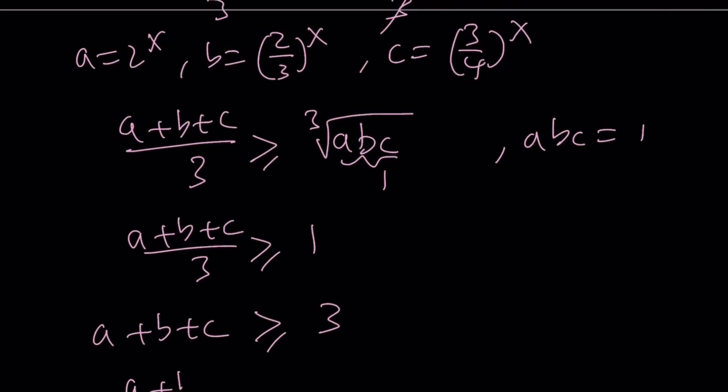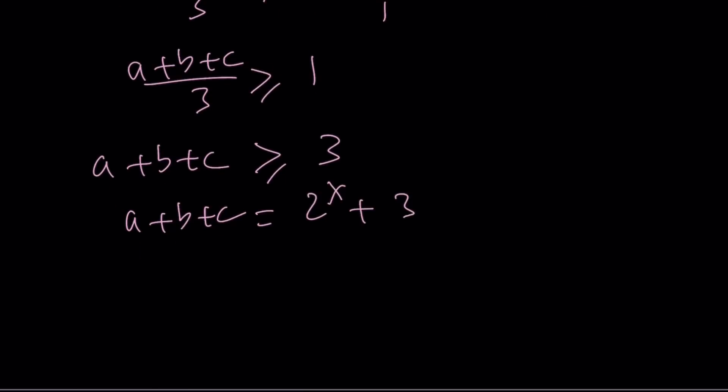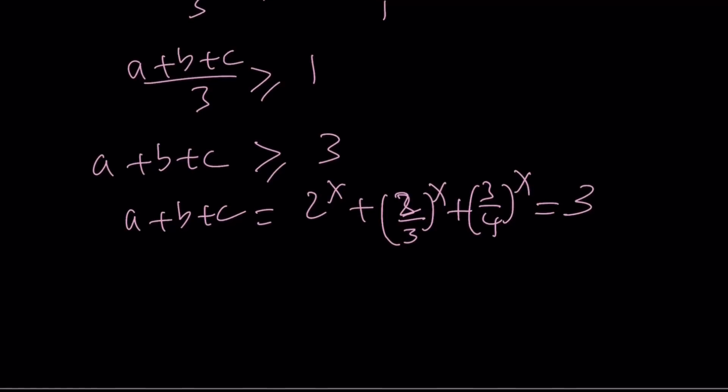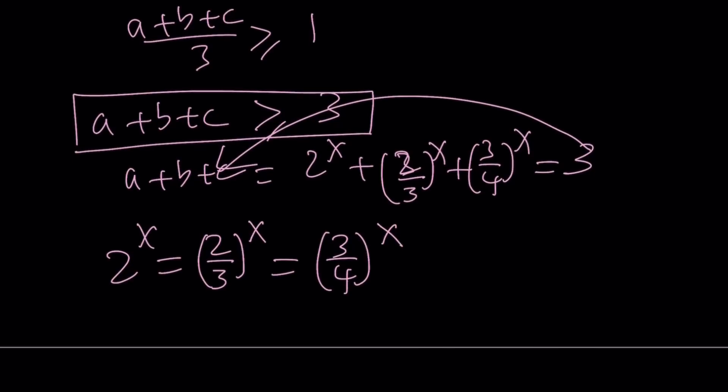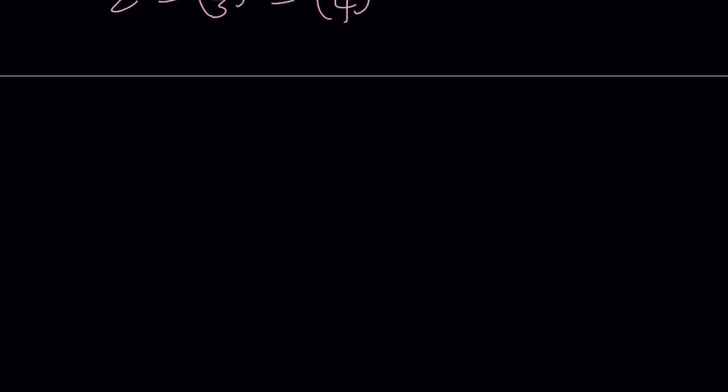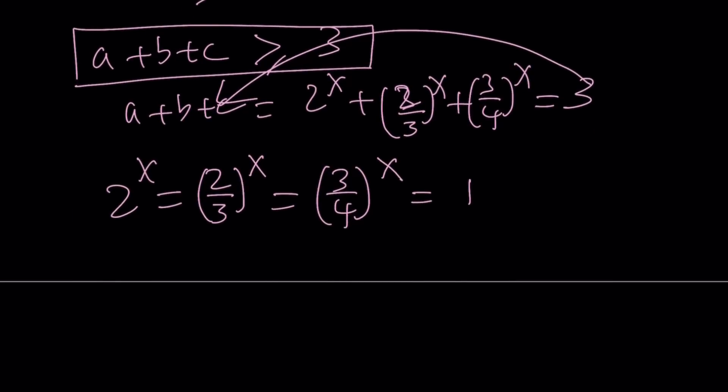But we know that A plus B plus C, which is 2 to the power X plus 2 thirds to the power X plus 3 fourths to the power X is equal to 3. So A plus B plus C is equal to 3 when ABC are all equal. So with the AM-GM inequality, the equality is satisfied when all the numbers or quantities are equal to each other. Which means that 2 to the power X needs to equal 2 thirds to the power X and that needs to equal 3 fourths to the power X in order for A plus B plus C to be 3. And this is only true if they're all equal to 1 because their sum is supposed to be 3. So each of them is 1, which means X is equal to 0 and that is going to be our solution.